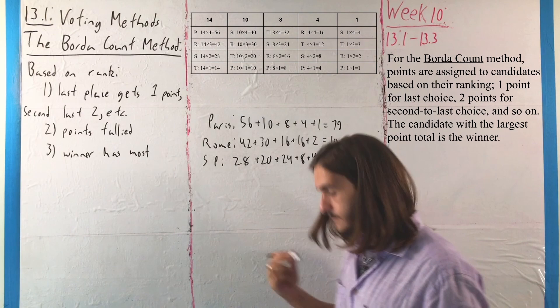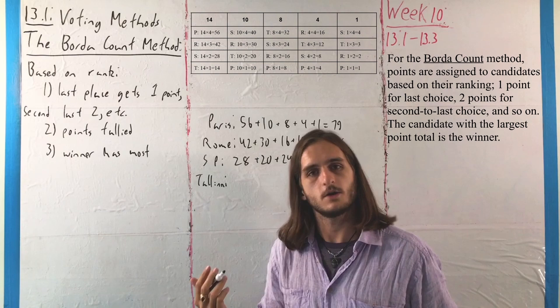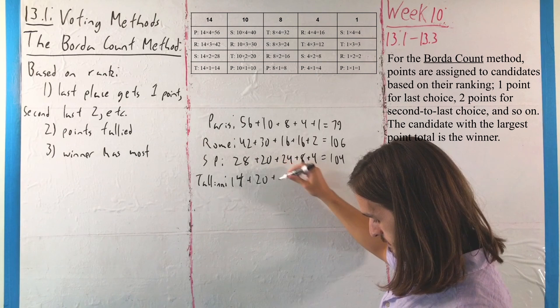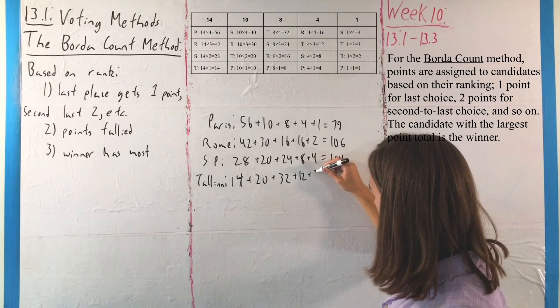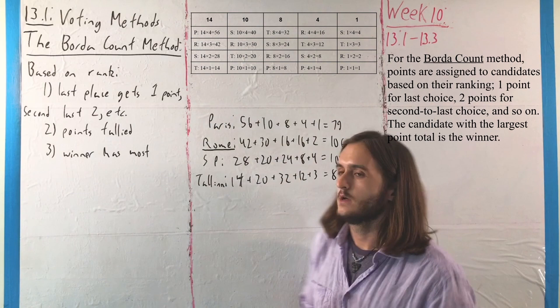And finally, for Tallinn — which I hope I'm pronouncing correctly, my knowledge of Estonian is very limited and I'd hope not to insult them, not least because they have very good internet and stand a decent chance of hearing about this — we end up with 14, plus 20, plus 32, plus 12, plus 3, for a total of 81 points. Because Rome has the most points, Rome is the winner of that election — Rome is where they would go if they used the Borda Count method.